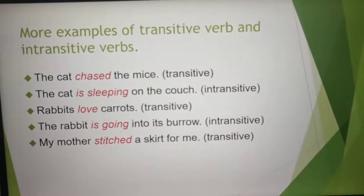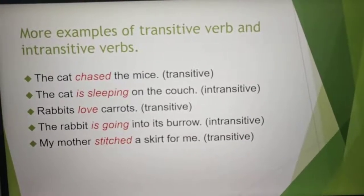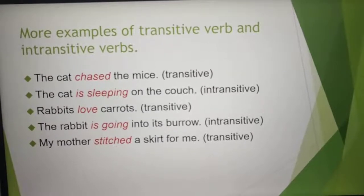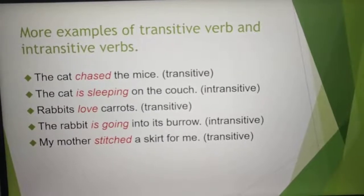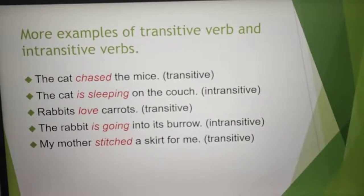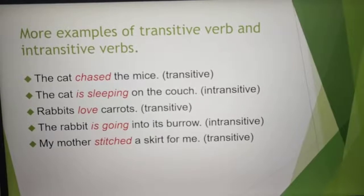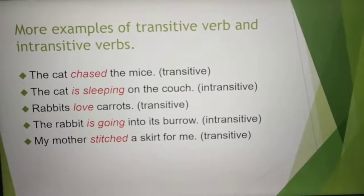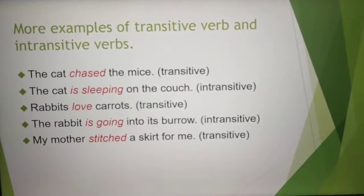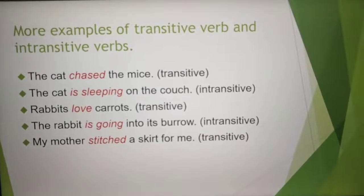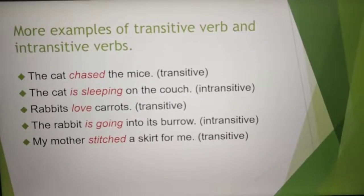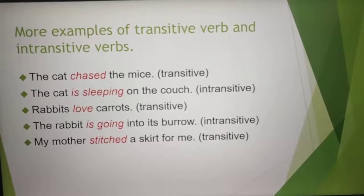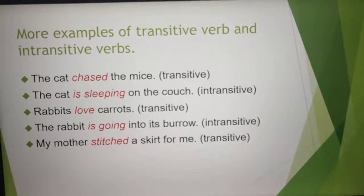'Rabbits love' — love what? Carrots. It is answering the question 'what?' So 'rabbits love carrots' is a transitive verb. 'The rabbit is going' — that sentence would have completed by itself. 'Into its burrows' is added, but the verb was already complete, so it is intransitive.